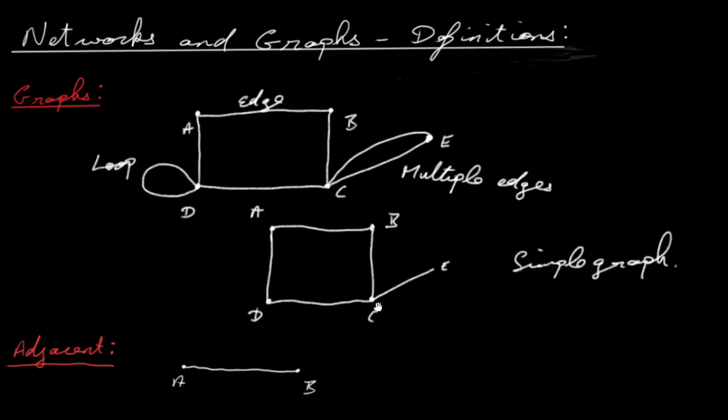A simple graph, on the other hand, is a graph that has no multiple edges and no loops. So this is an example of a simple graph here.